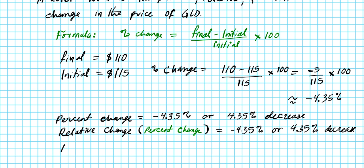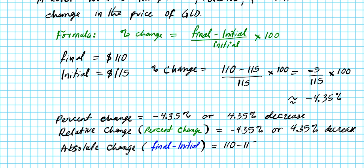Lastly, the absolute change is simply the difference between the final and the initial values. From our earlier work: 110 − 115 = negative 5. So the absolute change is negative $5, or a five dollar decrease — the price of GLD suffered a five dollar decrease after the election figures came out.